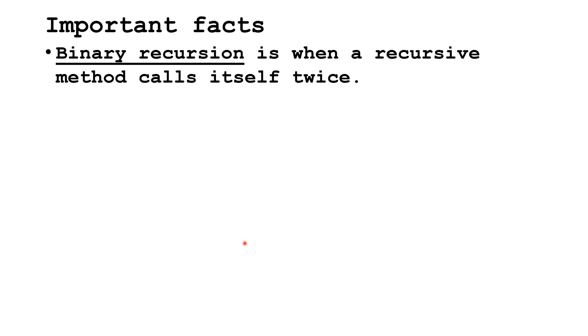Some important facts. Binary recursion is when a recursive method calls itself twice in each run.